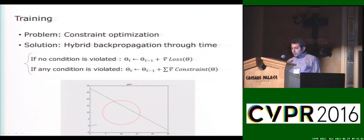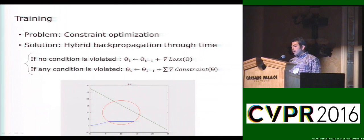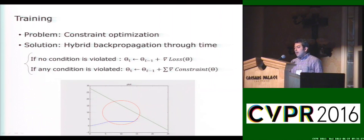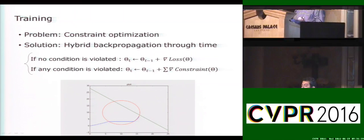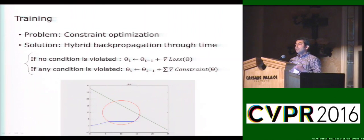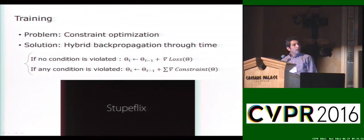There are several ways to include constraints in the optimization problem, such as using a weighted sum or Lagrange multipliers. Unfortunately, gradient descent performs poorly in optimizing such formulations. We use an alternative approach called hybrid gradient descent, which in practice shows better results. The basic idea is to update the model with respect to the gradient of the cross-entropy loss if all constraints are satisfied; otherwise, it updates parameters with respect to the average gradient of the violated constraints. We modify backpropagation through time using this hybrid gradient descent method.